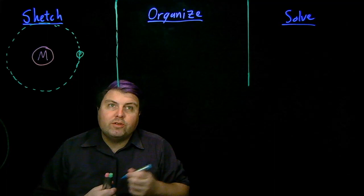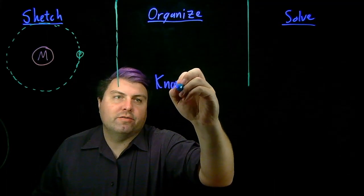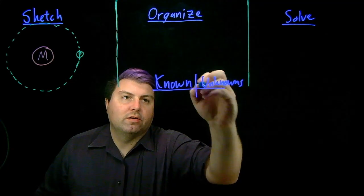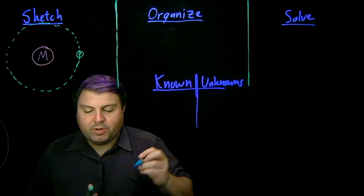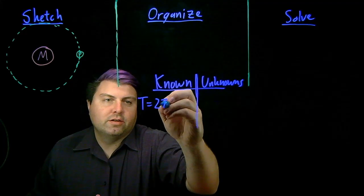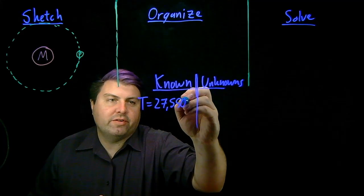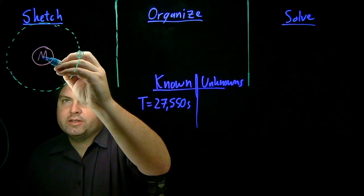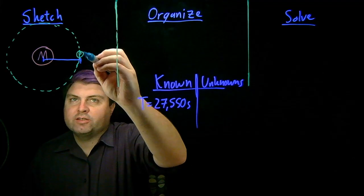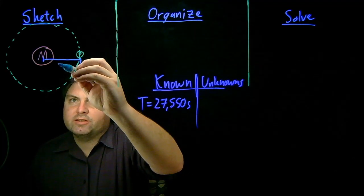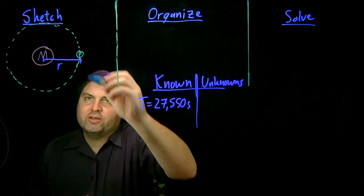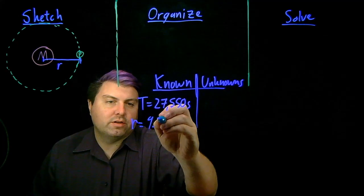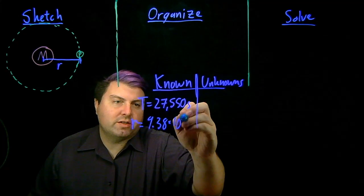So we do know a couple things in our knowns and unknowns. We can measure its period T, 27,550 seconds. We can also measure the orbital radius. When we say the orbital radius, since we can have an actual radius to Phobos, the orbital radius is this r, the distance between the center of Mars and the center of Phobos, and this r is 9.38 times 10 to the 6 meters.